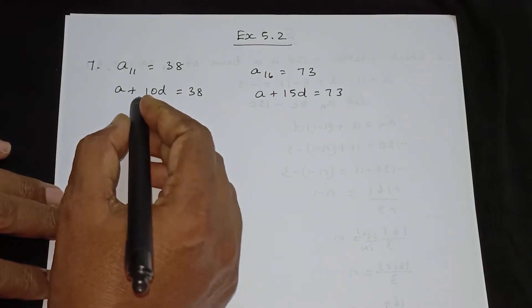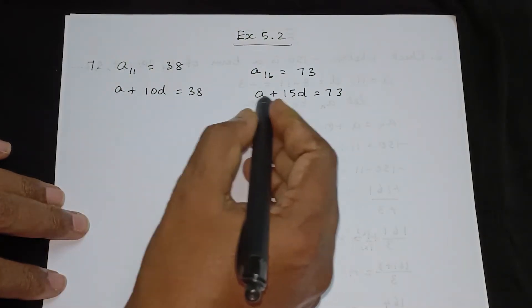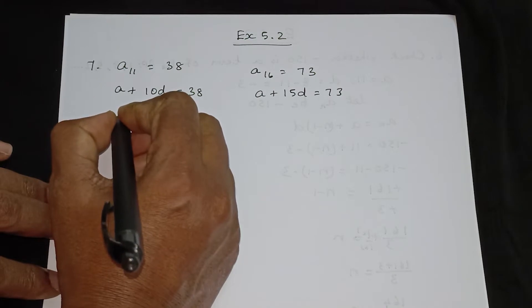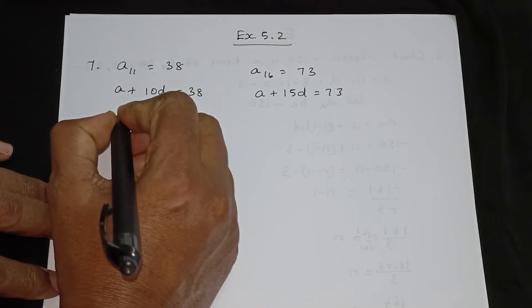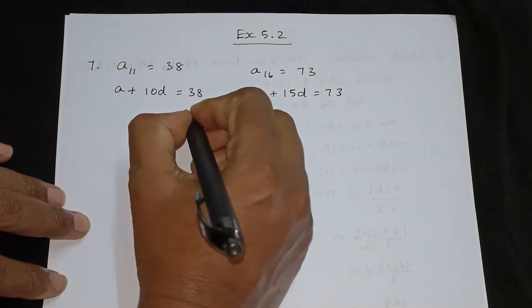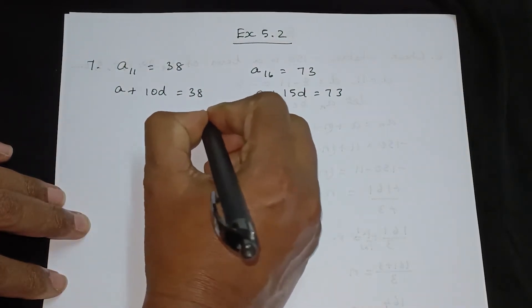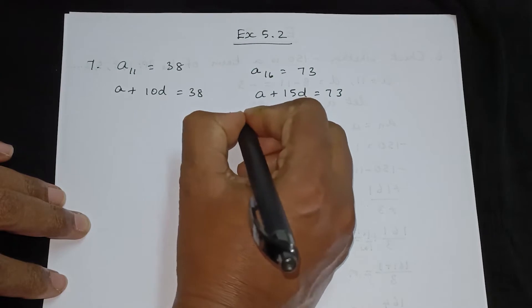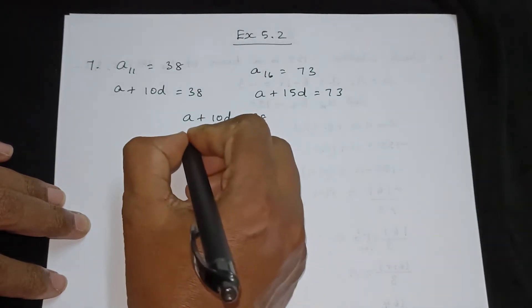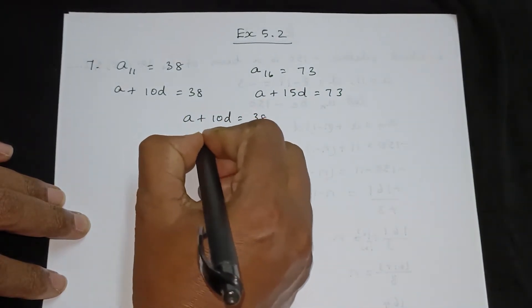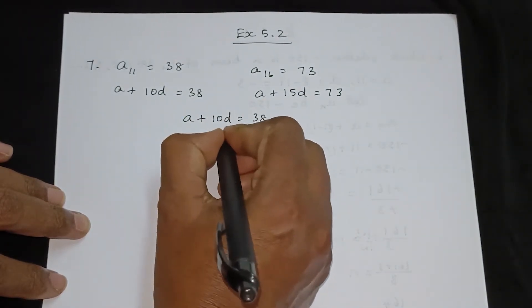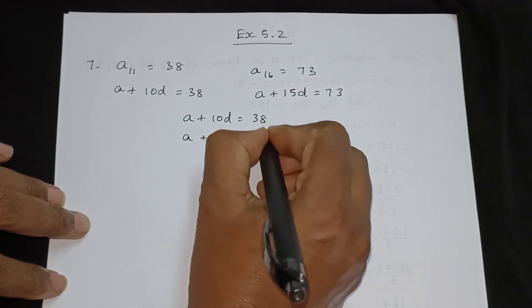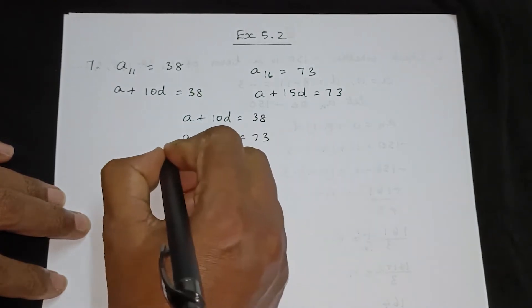Now we use the elimination method. We write both equations: a plus 10d is equal to 38, and a plus 15d is equal to 73.